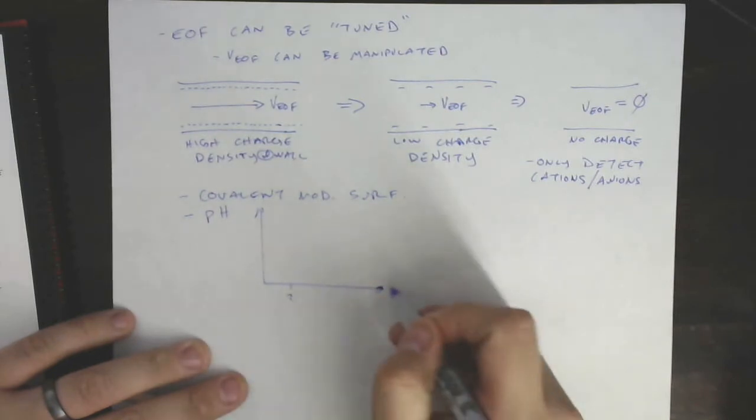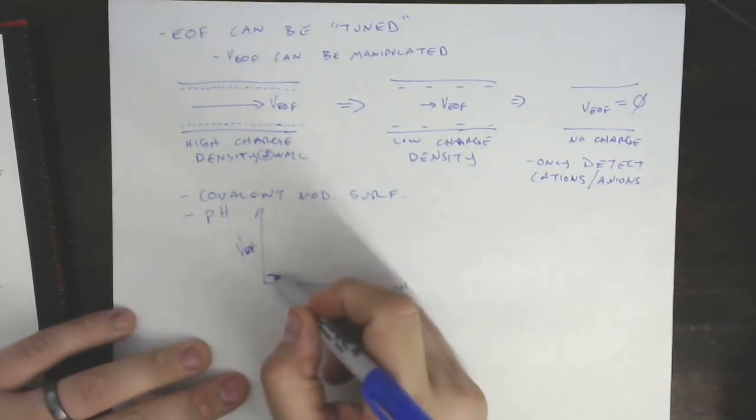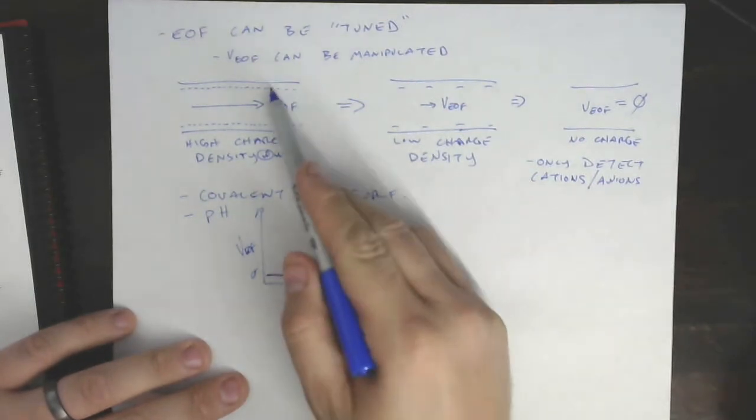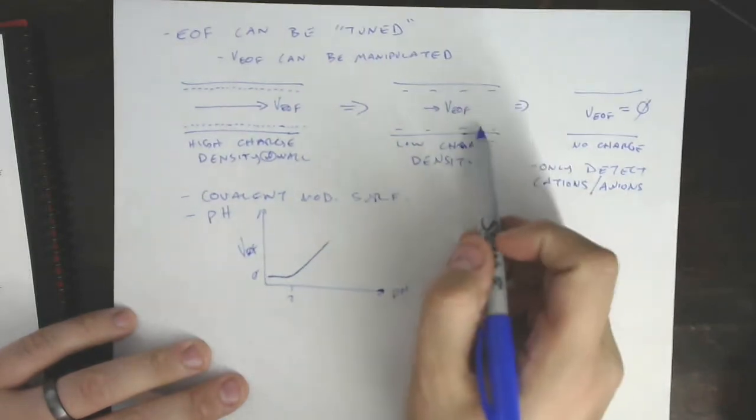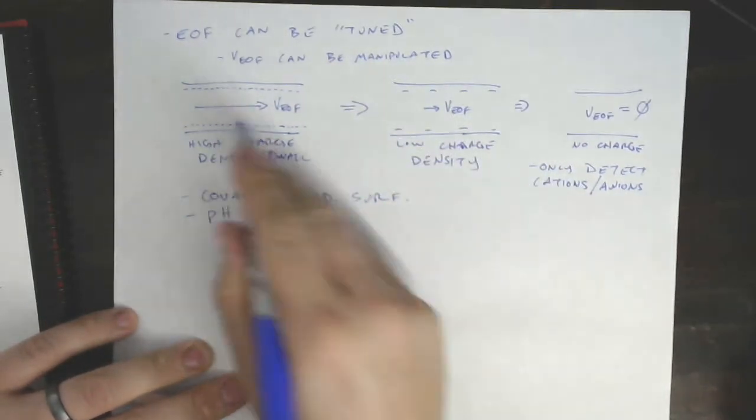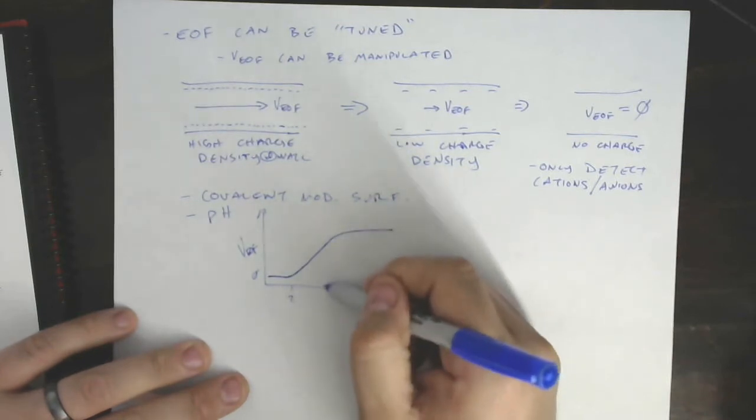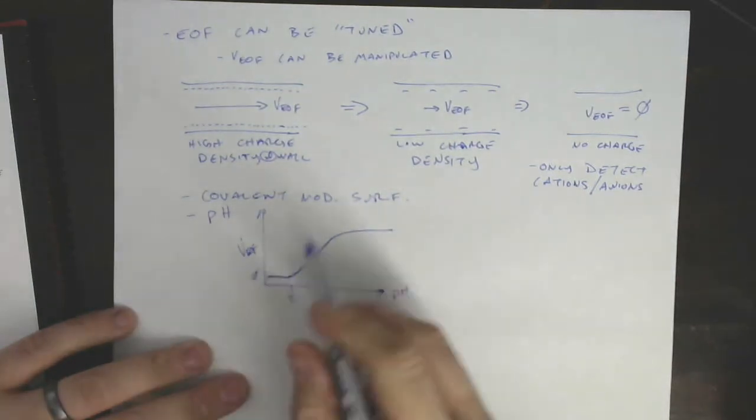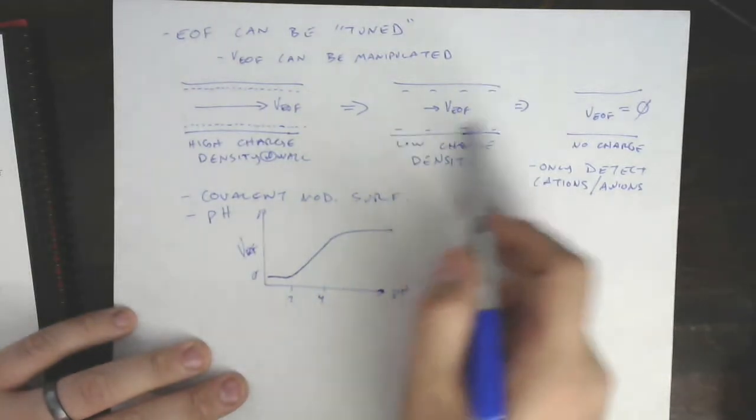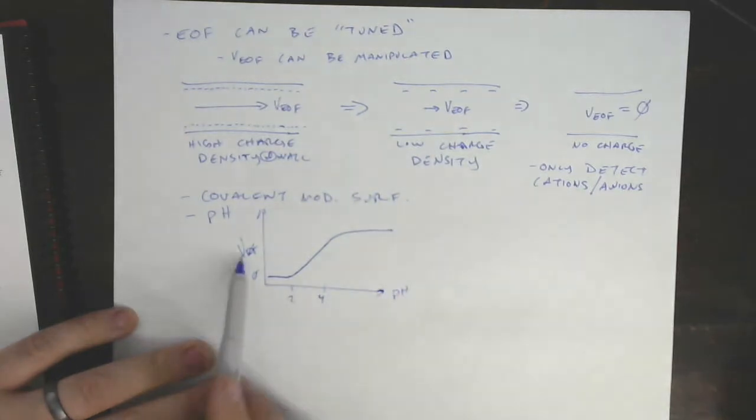At some low pH, we're going to have very low, if any, close to zero velocity EOF. As this becomes deprotonated, it will deprotonate gradually, so we'll go through a condition like this where we have moderate EOF, until eventually we get to our maximum charge density. I actually don't know what kind of pH range we're talking about. We're likely talking about in the range of two to probably four or thereabouts. But you have some range where we're changing the density of charge on the wall, and that'll change the velocity EOF.